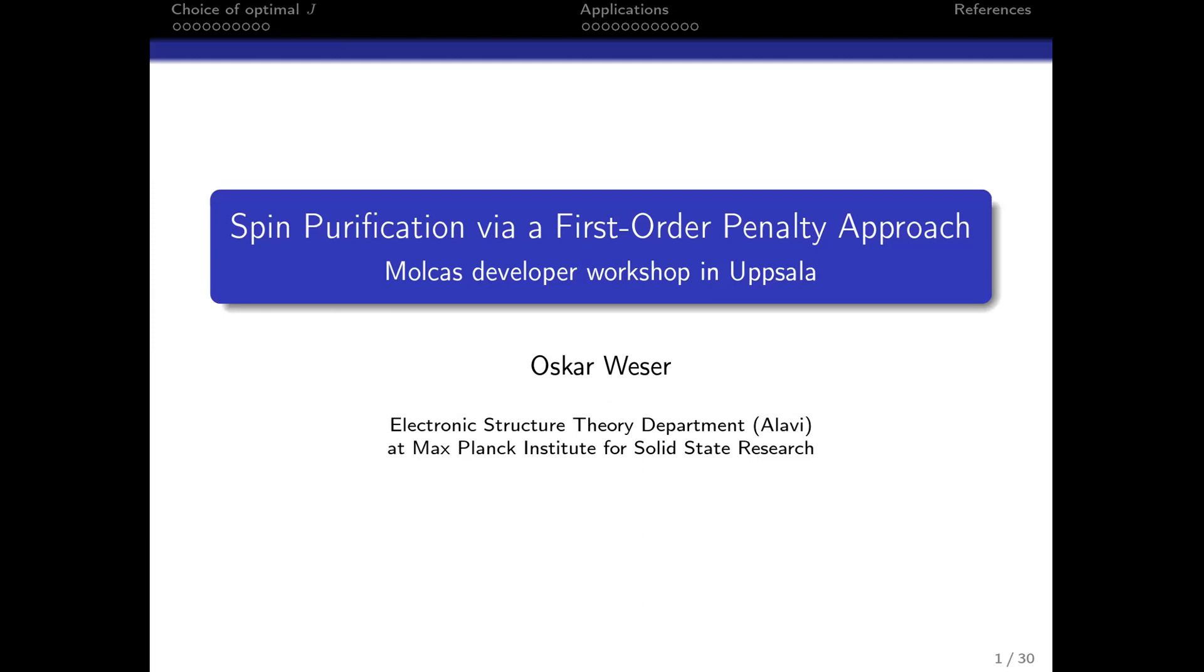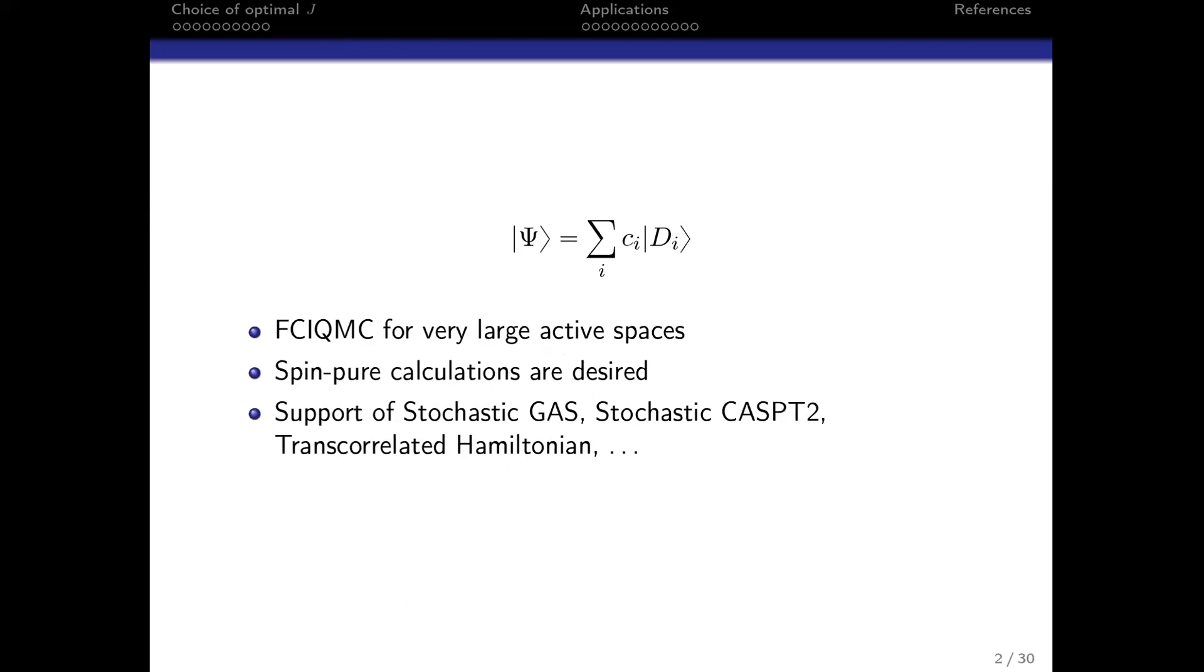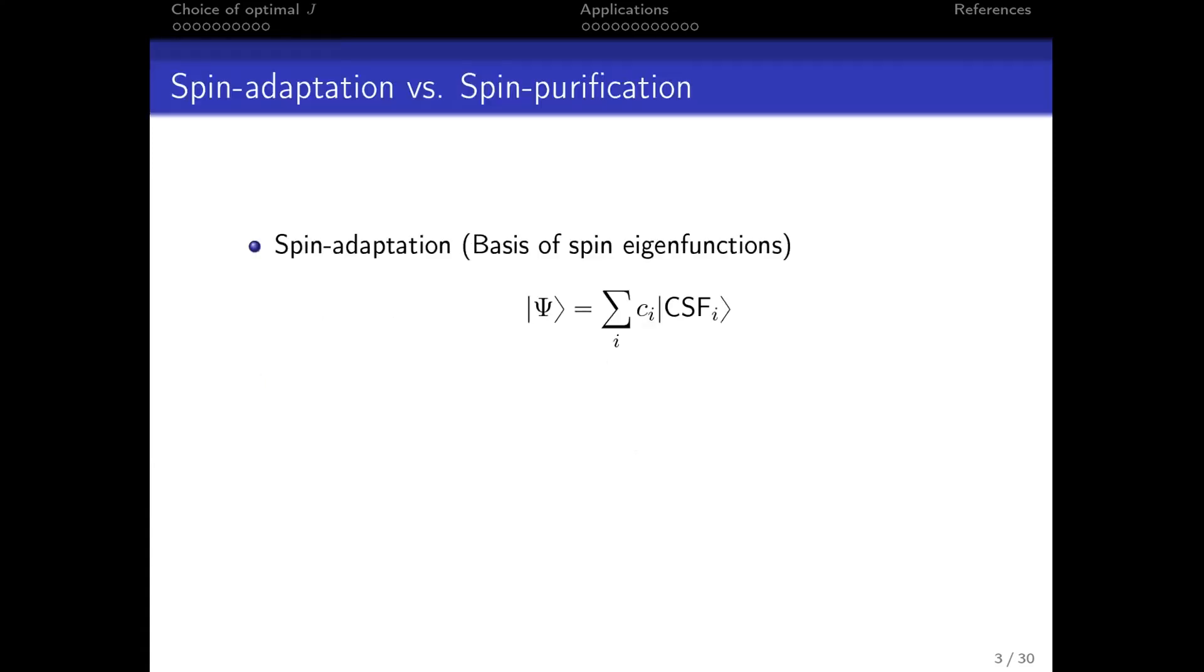First, why? You all know the CI problem and we want to achieve very large active spaces in a spin-pure way. We are lazy and don't want to rewrite all the other codes and theory, so it should be somehow compatible with stochastic CASSCF because we do transcorrelated Hamiltonian and so on.